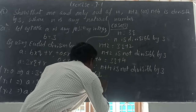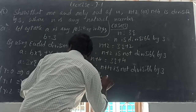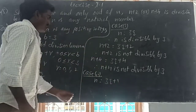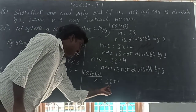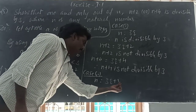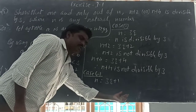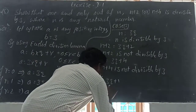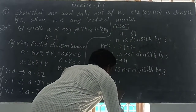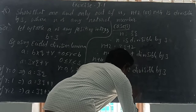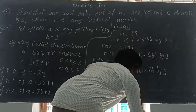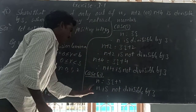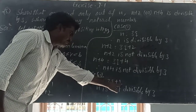Second case: N is equal to 3Q plus 1. Here, this number is divided by 3 and the remainder is 1. So therefore N is not divisible by 3, because when divided by 3 the remainder is 1.